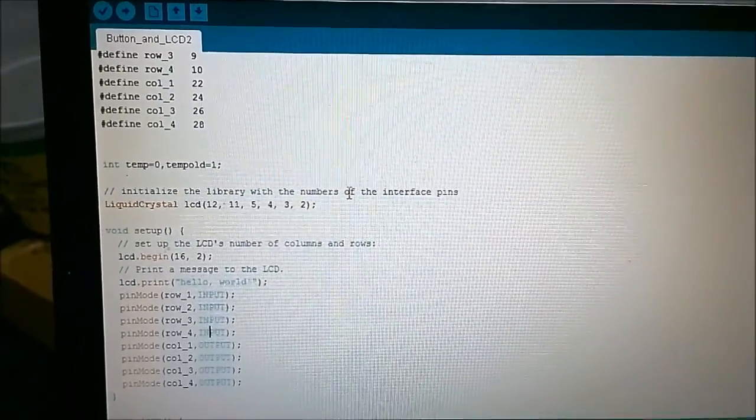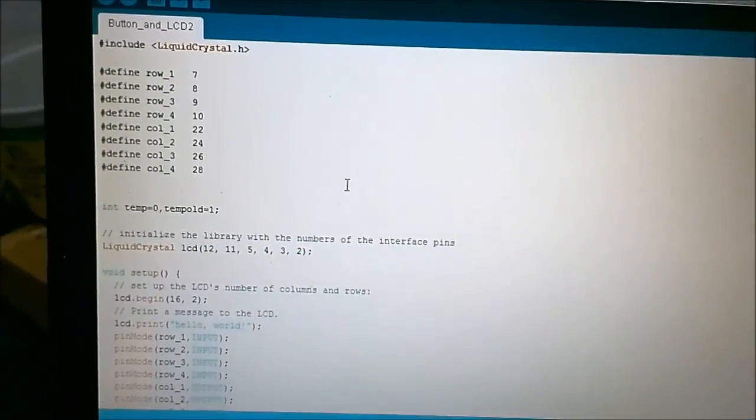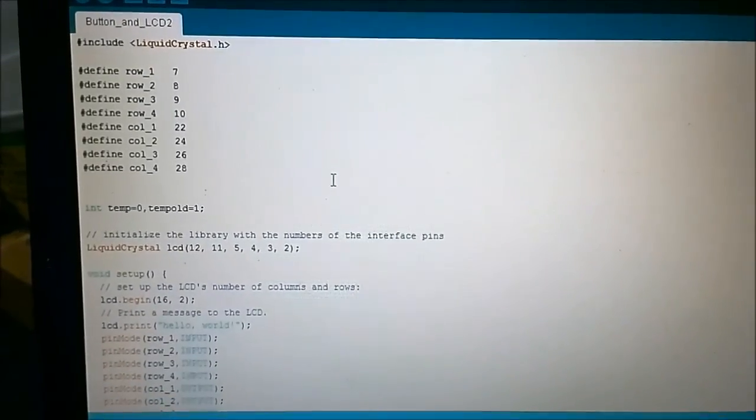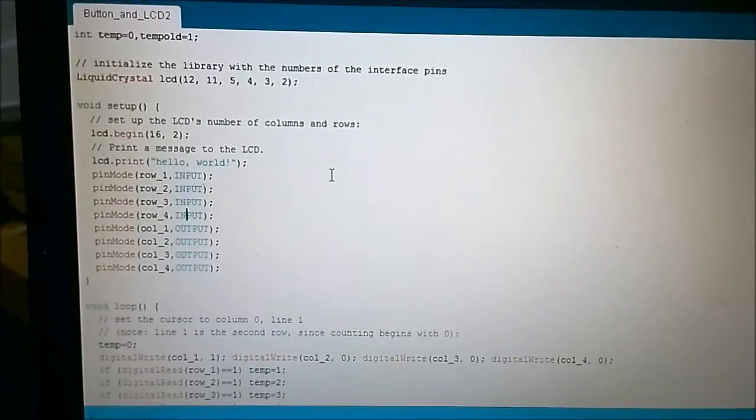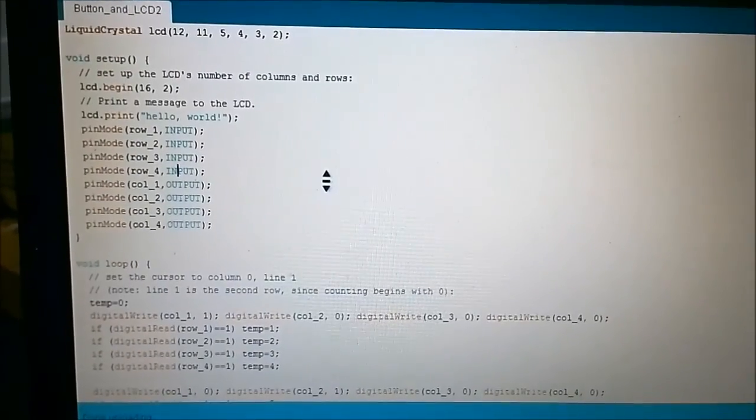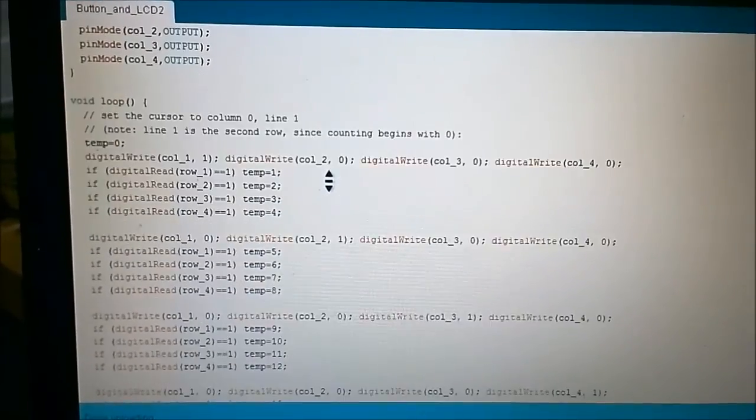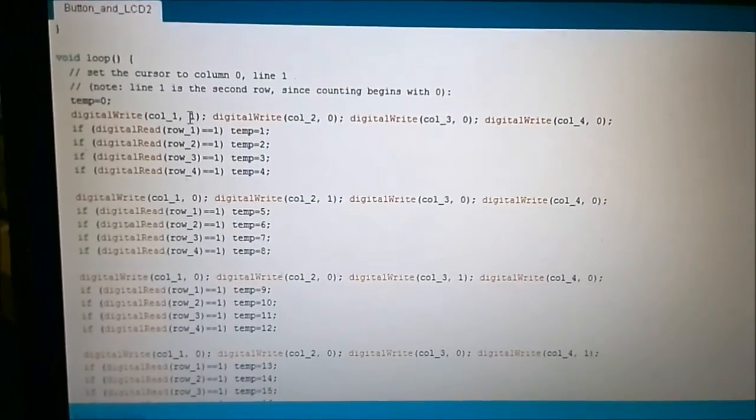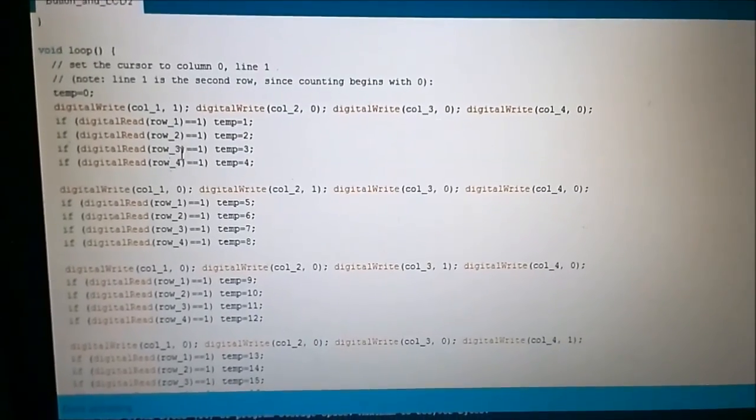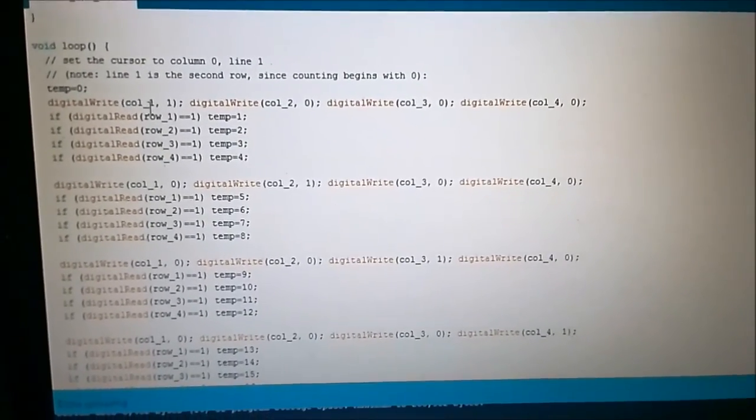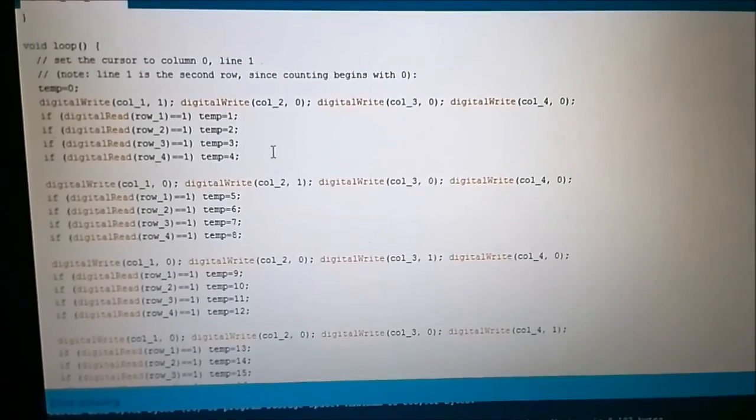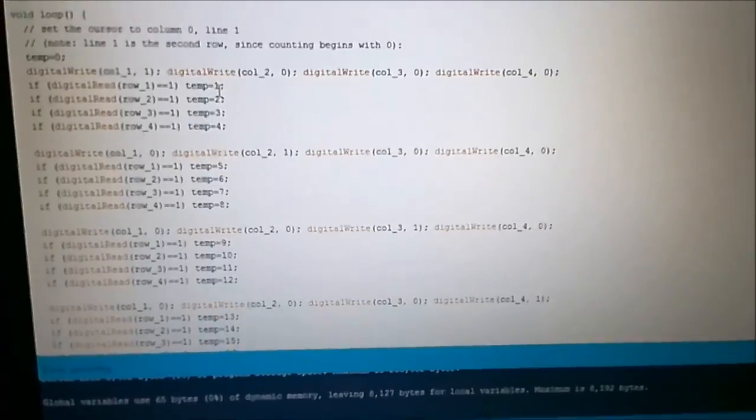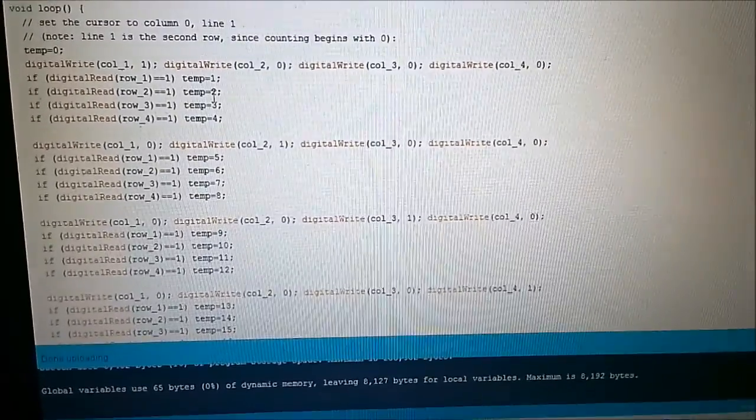Now I didn't take time to double check the row and the column numbers, this is just a quick demonstration. But I made sure I set the rows for the inputs and the columns for the outputs. Then basically what you do is you turn on one row pin and turn the others off, and then you read. Sorry, turn on one column pin, turn all the other column pins off, and then you read each individual row pins one at a time. And if it happens to match then you set a value.